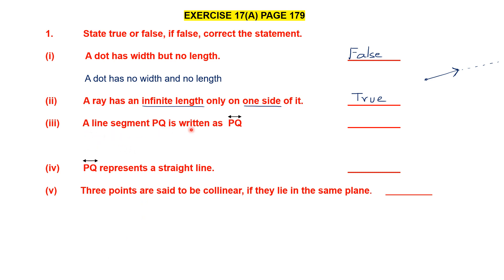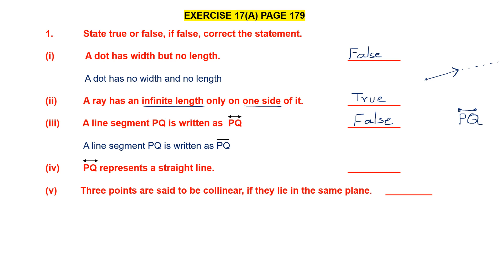Third one. A line segment PQ is written as PQ — can you see that symbol on top? Now if it is a line segment, we know a line segment has definite length. It will start at one point and end at another point. This is what the symbol of a line segment looks like, starting at a point and ending at a point. Whereas here there are two arrowheads. Arrowheads indicate it is going on indefinitely, so this statement is false. A line segment PQ is written as PQ with a line on top — no arrowheads.